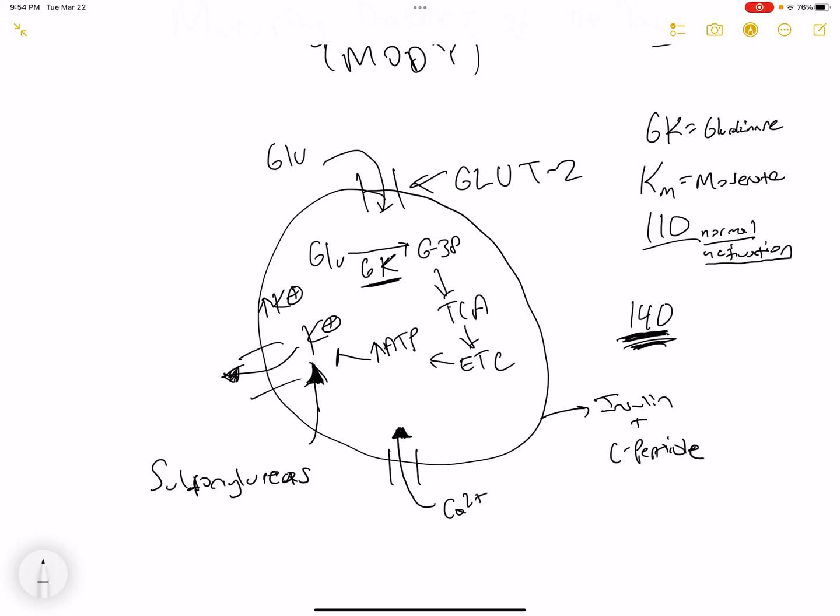So sulfonylureas are going to inhibit the potassium channels, and then we have a buildup of potassium which is going to result in depolarization, opening of voltage-gated calcium channels, calcium flowing into the cell, and finally the release of insulin as well as the C-peptide. And that is all for today.